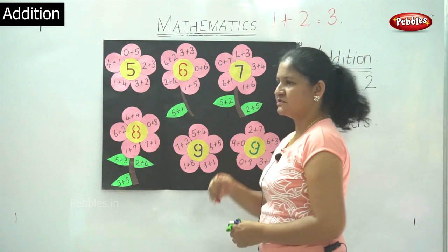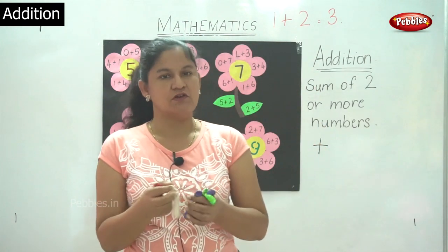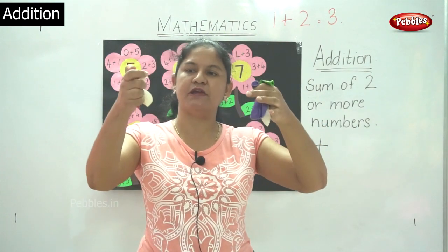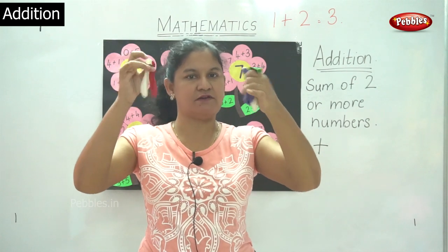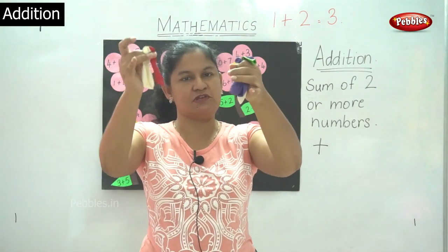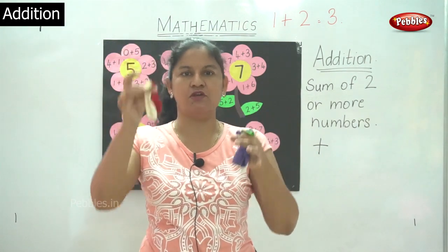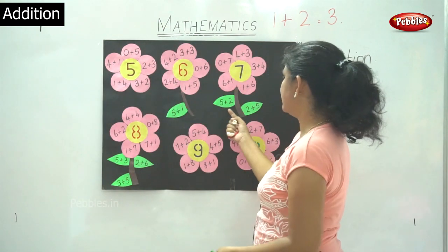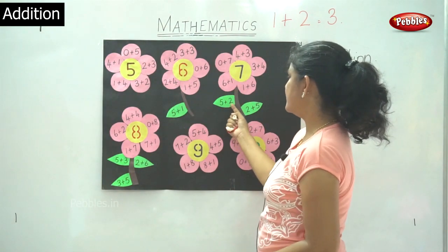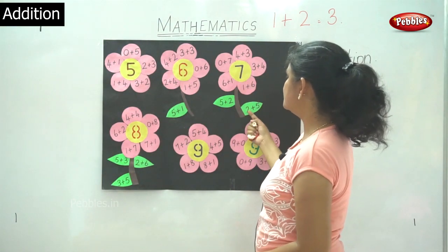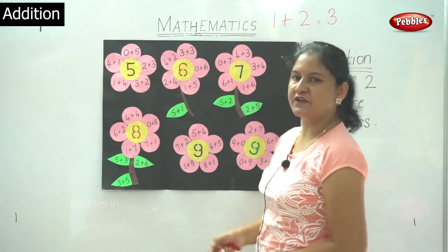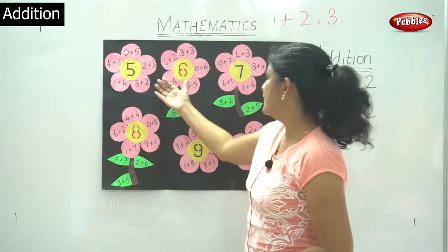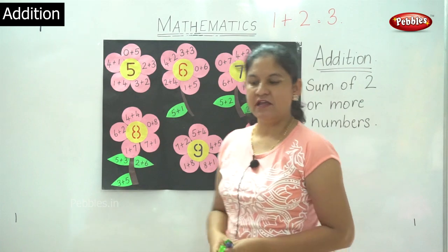The next concept: I have 5 balloons in my left and 2 balloons in my right. So 5 plus 2 gives me 7 or 2 plus 5 gives me 7. So we have seen the concept of 5, 6 and 7.